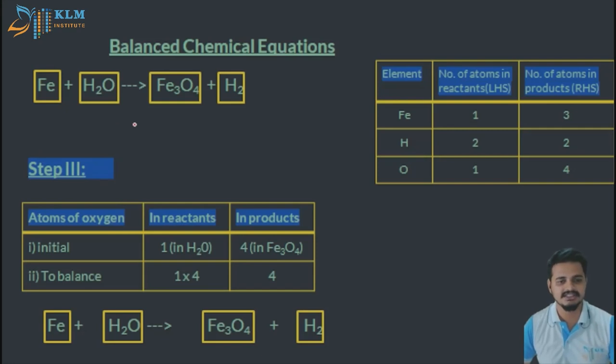In the first step, you can see which has the highest number of unbalanced atoms. You can see here there are four oxygen atoms here and there is only one oxygen atom.